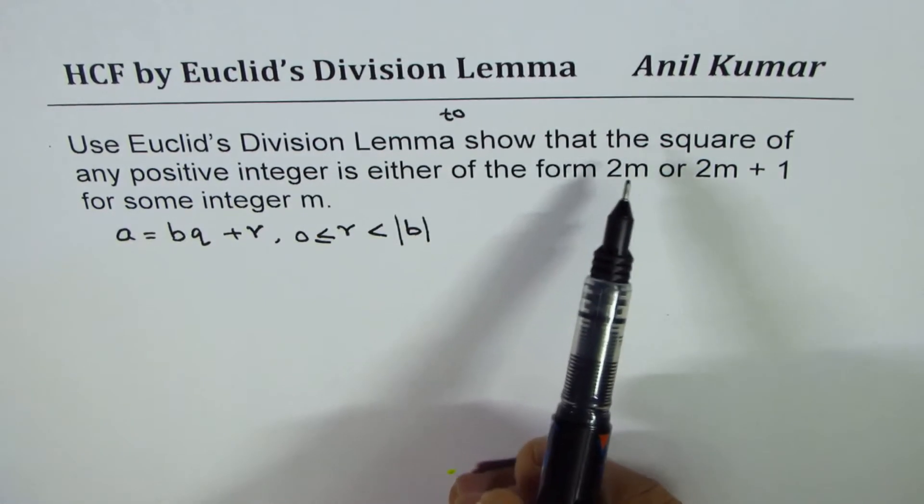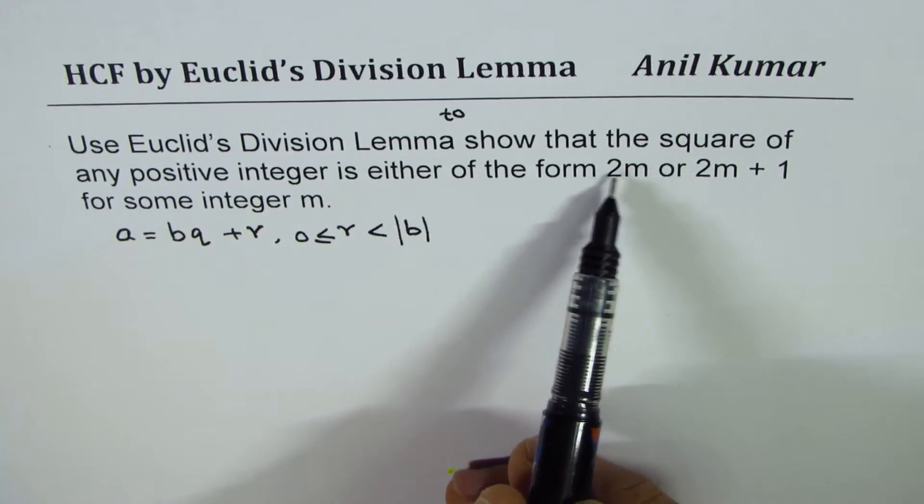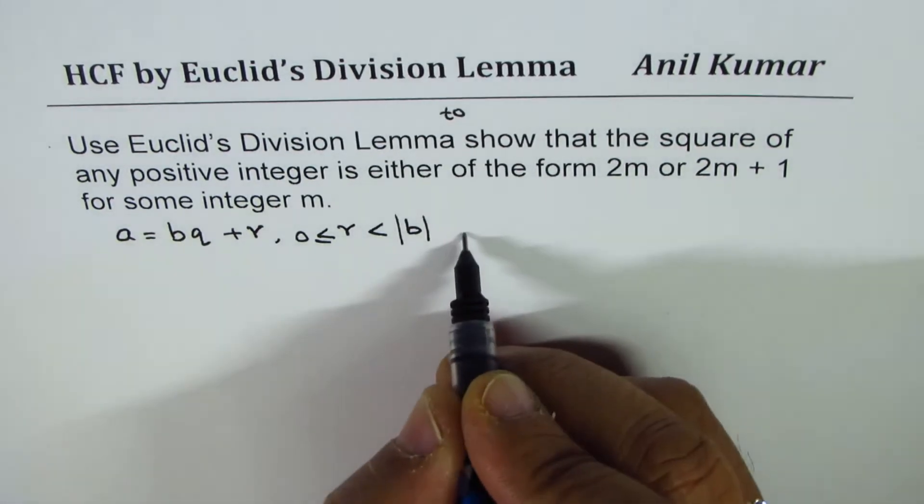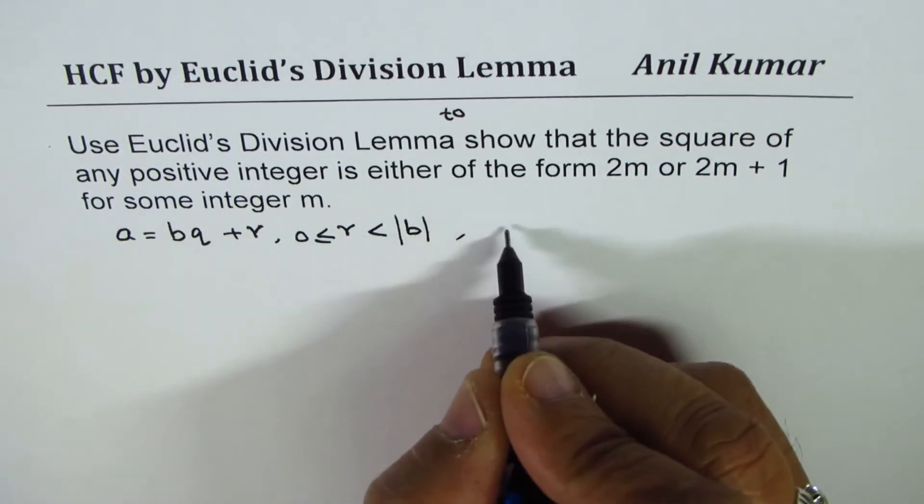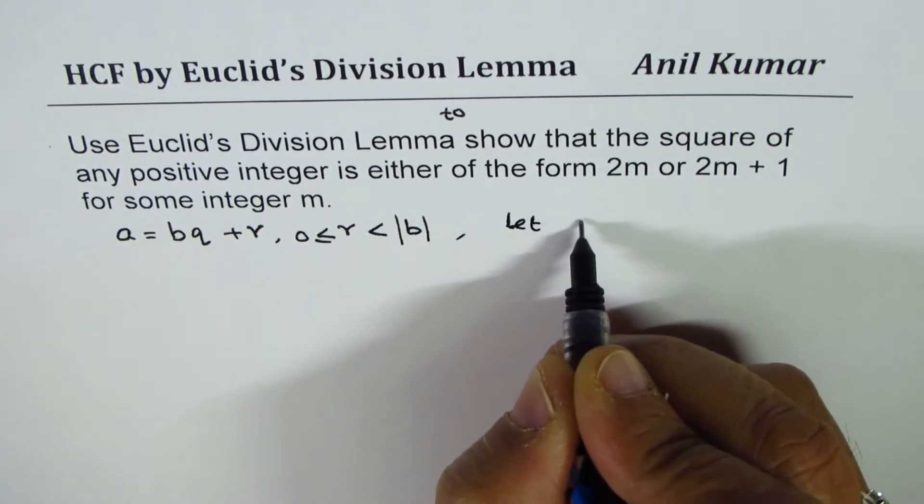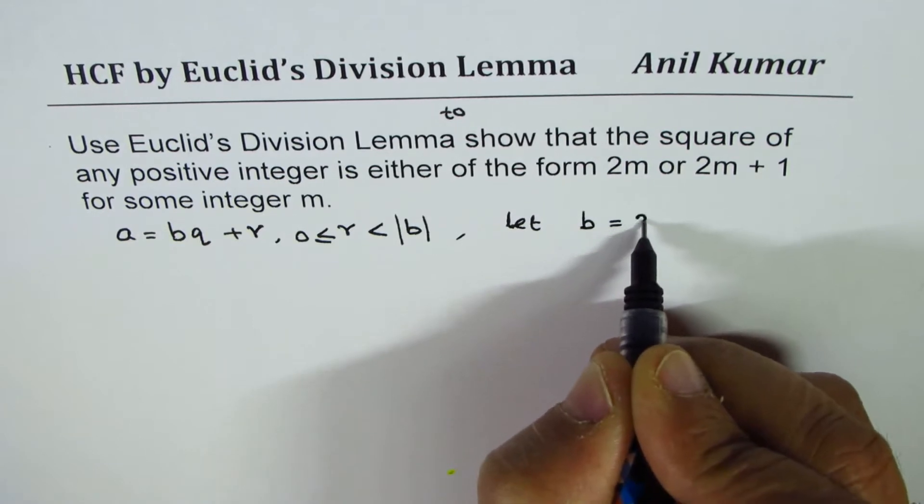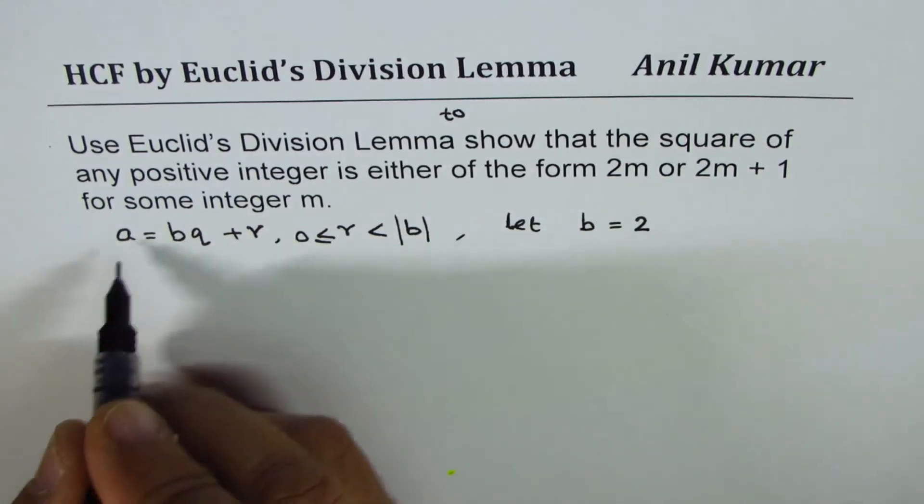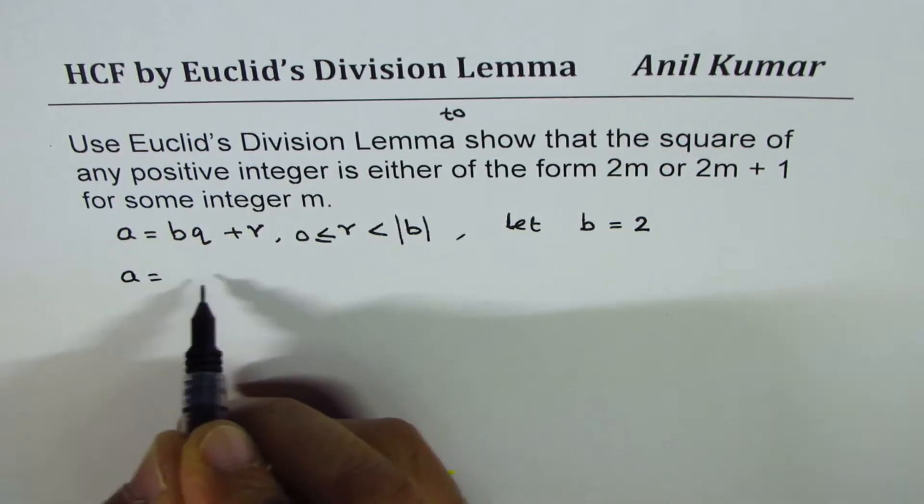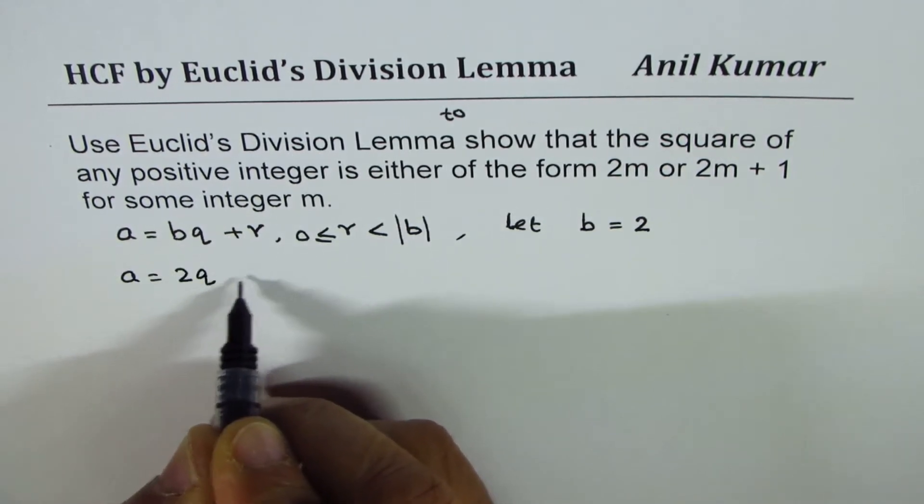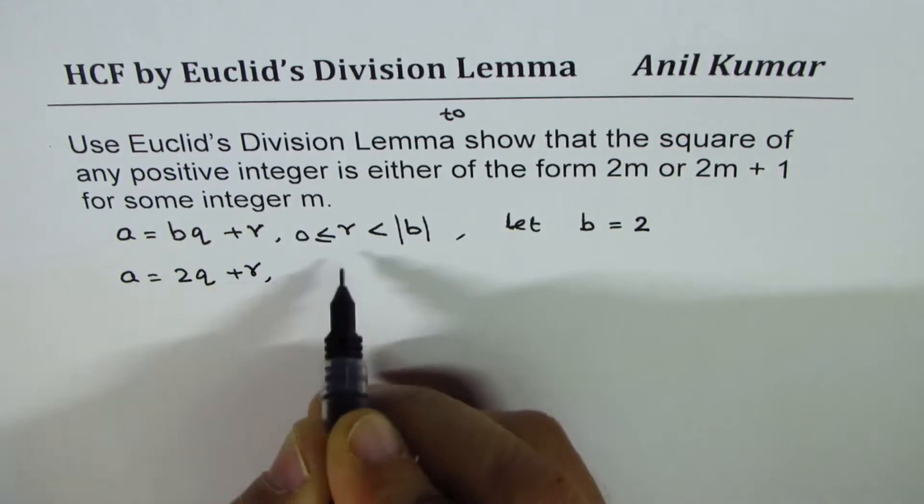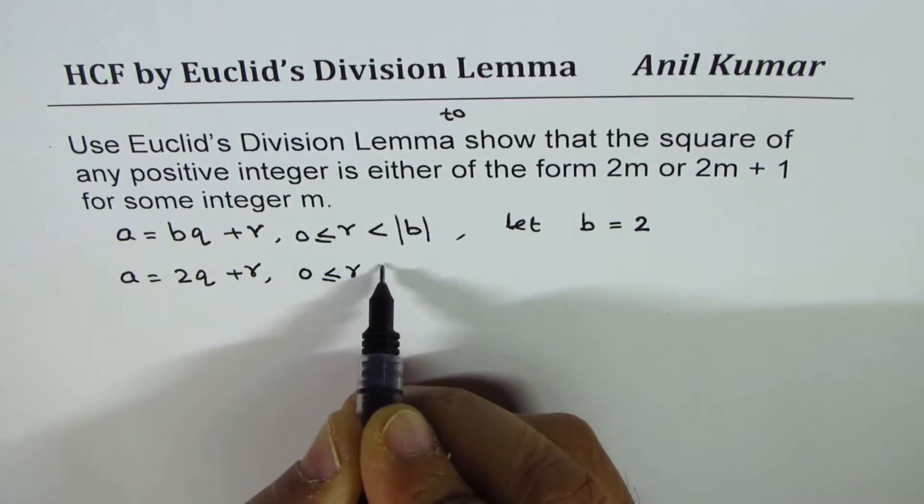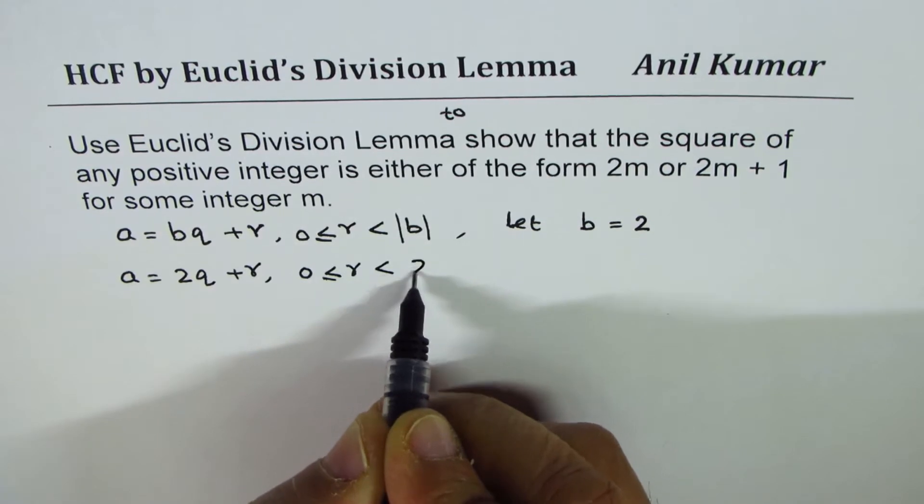Let me take the numbers such that b = 2. In that case, if b is 2, I could write a = 2q + r. Now r could be greater than or equal to 0 and less than 2.